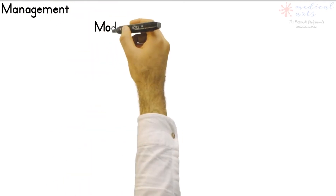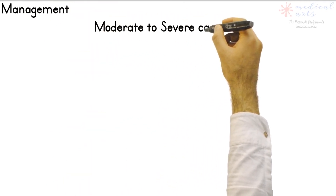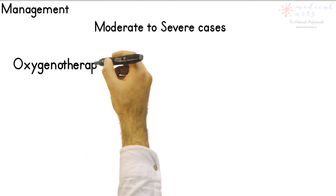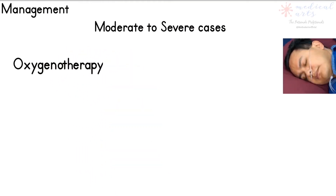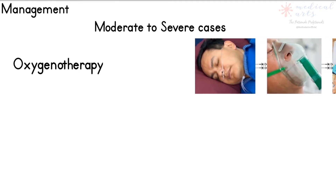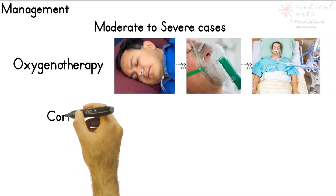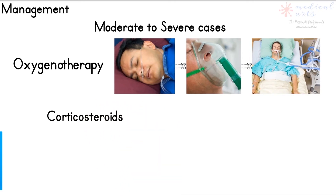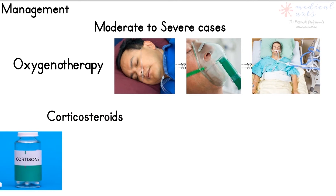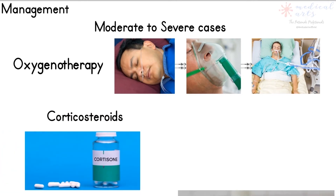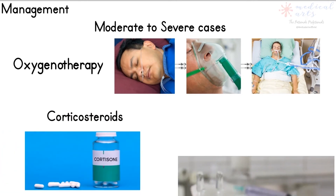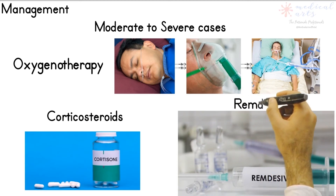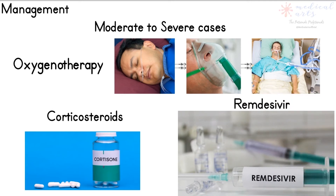Moderate to severe cases require hospitalization and more aggressive interventions to maintain adequate oxygen levels in the blood using non-invasive ventilation. Ultimately, admission to an intensive care unit for mechanical ventilation may be required to support breathing. Prone positioning showed improved ventilation. The use of corticosteroids improved survival in hospitalized patients with severe COVID-19 disease requiring supplemental oxygen. Remdesivir, an antiviral agent, was the first drug approved for the treatment of COVID-19.